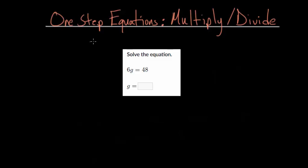For this video, I'd like to talk about one-step equations using multiplication and division. So you can see we have this problem, 6g equals 48.